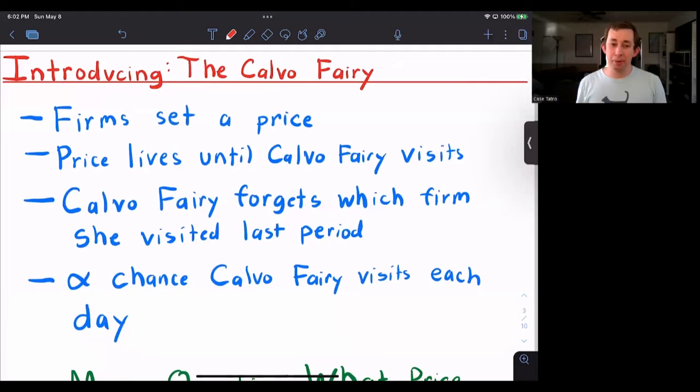It can change the price that the firm sets when the Calvo Fairy walks into their firm. The Calvo Fairy has an alpha chance of walking into your firm on any given day because the Calvo Fairy doesn't super remember where she's been and where she hasn't been. So every firm has an alpha chance of the Calvo Fairy visiting them in every period.